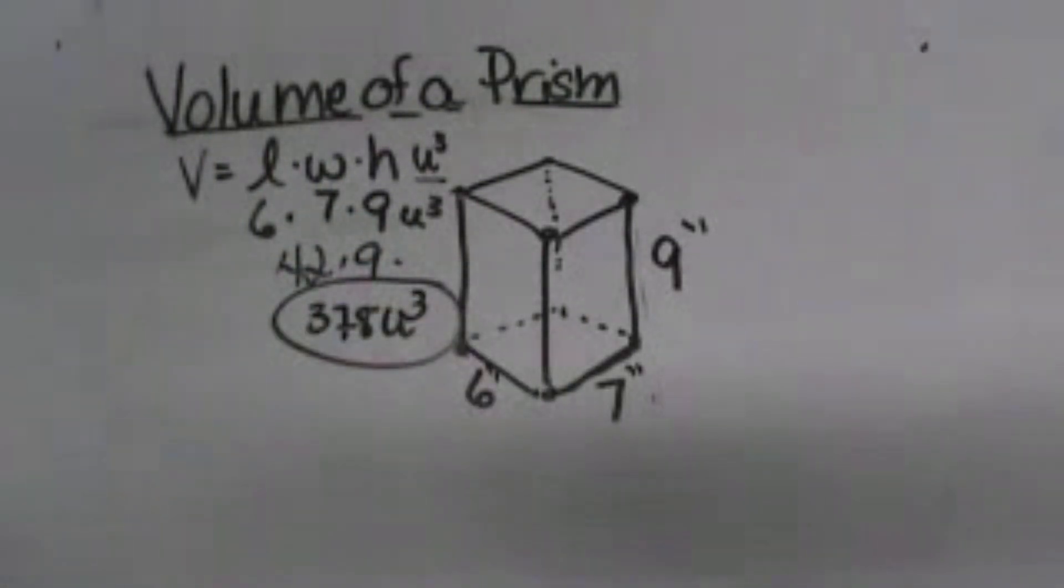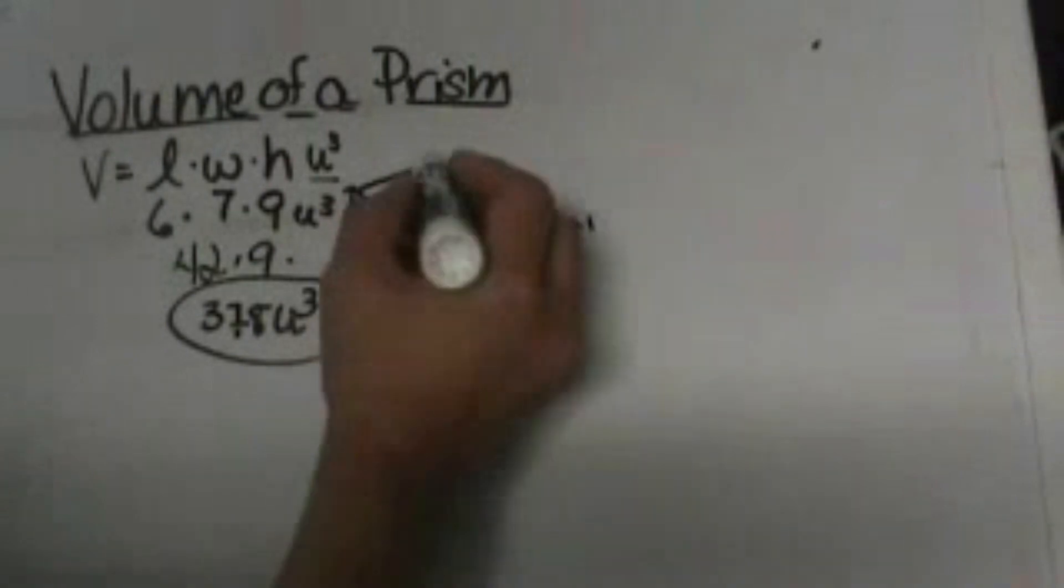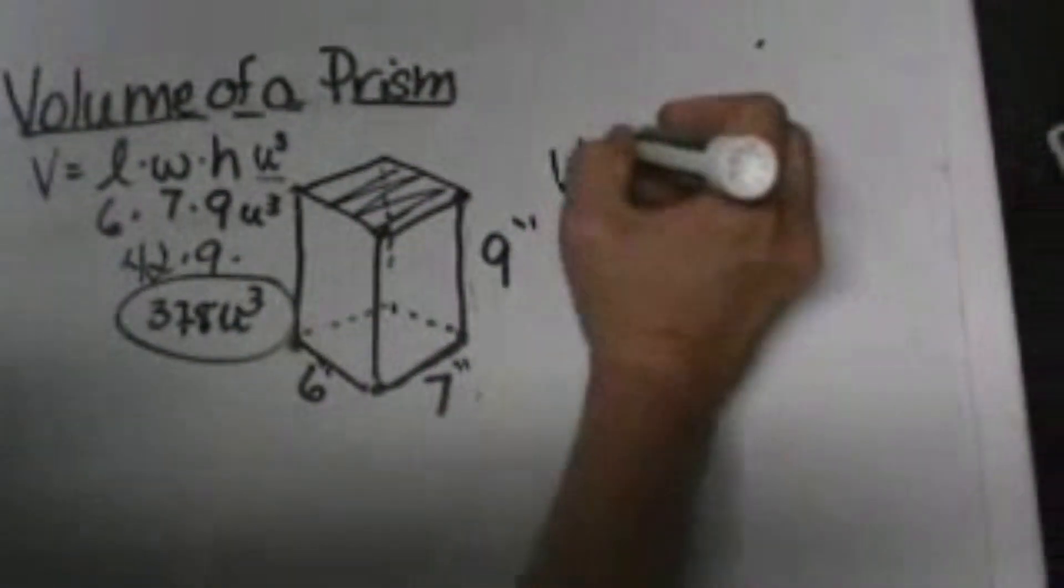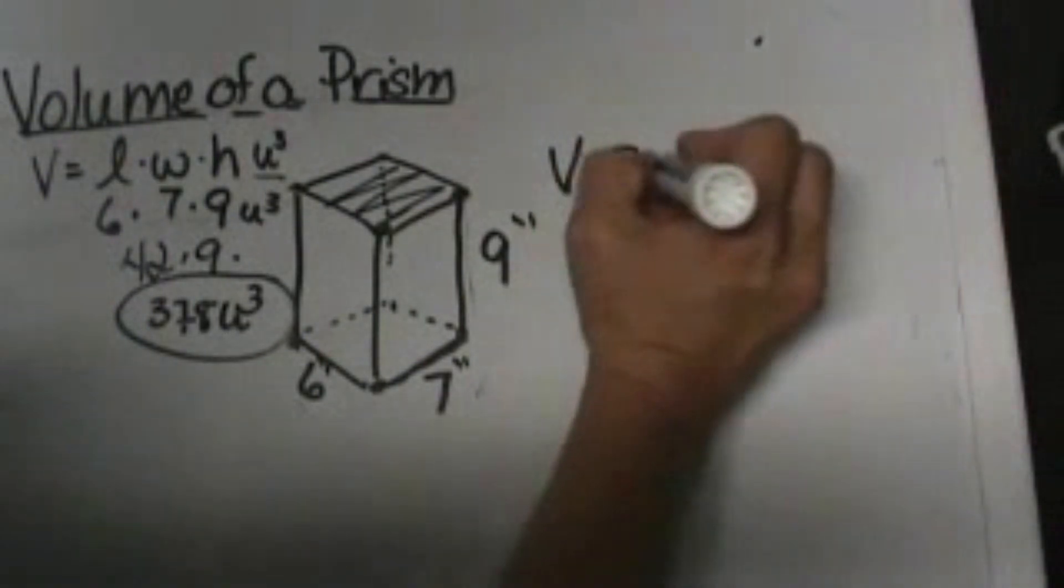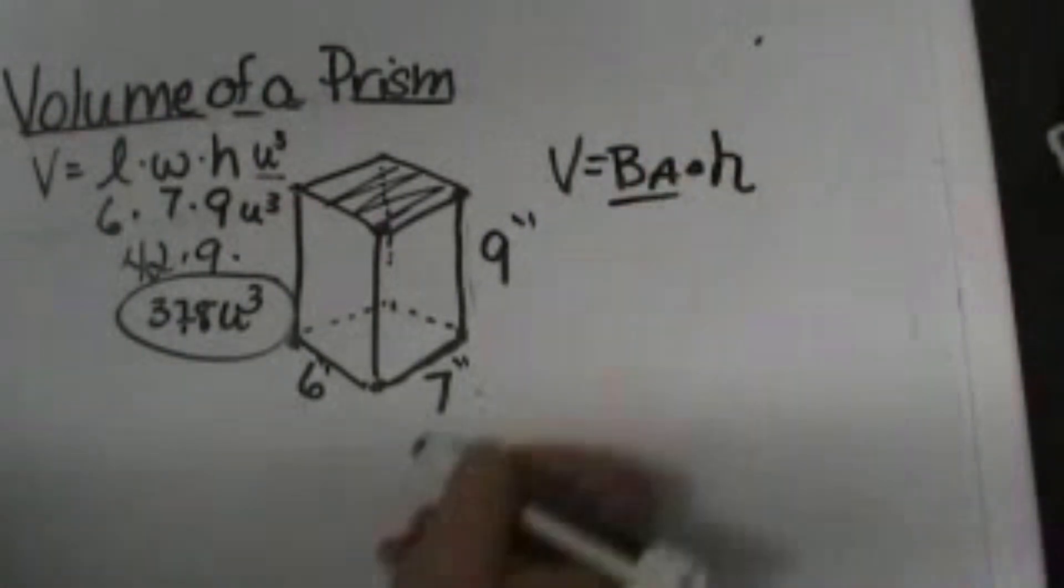That's how you find the volume of a prism. The basic idea is if you have a prism that has a different shaped base, you're going to find whatever the area of that base is. So we're just going to say base area, and then you're going to take it times the height.